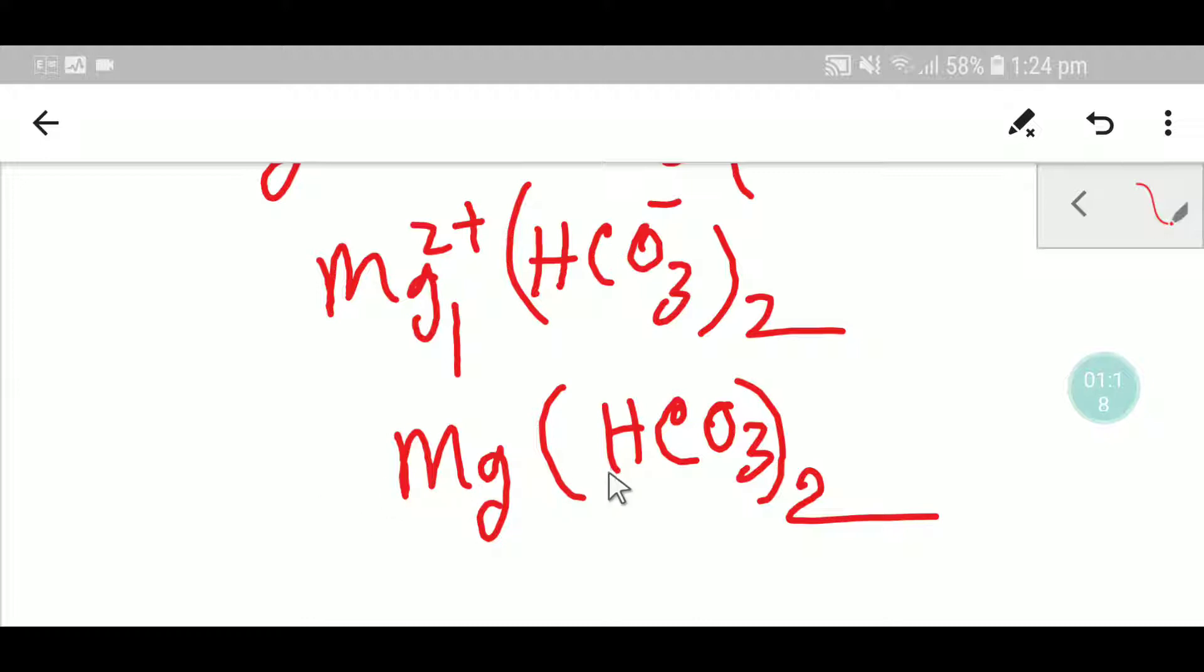This is the formula of magnesium bicarbonate. The alternative name of magnesium bicarbonate is magnesium hydrogen carbonate.